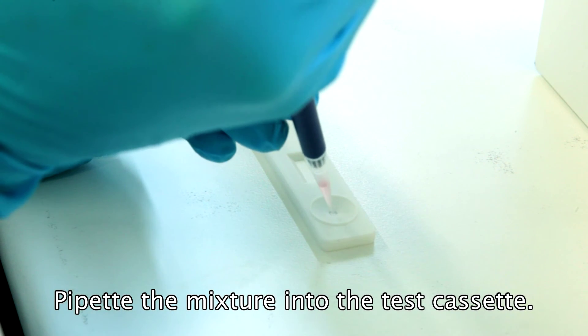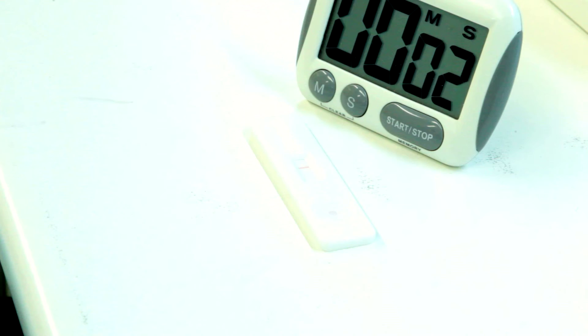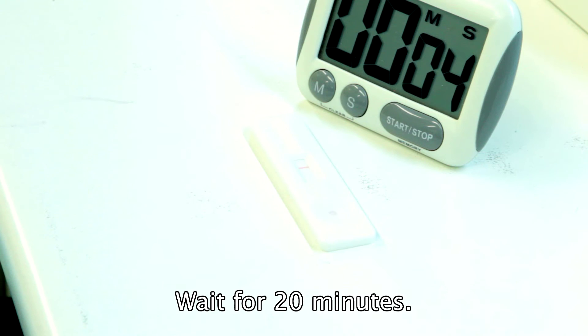Transfer 80 µl of the conjugate sample mixture into the test cassette sample well. Start the timer. Wait for 20 minutes.